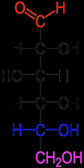In the strict sense, 'sugar' is applied for sweet, soluble carbohydrates, many of which are used in food. Formerly the name 'carbohydrate' was used in chemistry for any compound with the formula C_M(H2O)_N. Following this definition, some chemists considered formaldehyde to be the simplest carbohydrate, while others claimed that title for glycolaldehyde. Today, the term is generally understood in the biochemistry sense, which excludes compounds with only one or two carbons and includes many biological carbohydrates which deviate from this formula.